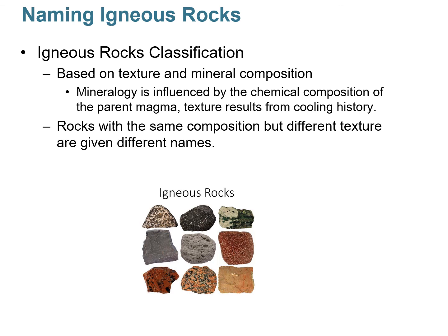So how are igneous rocks classified? Essentially it's based on their texture — all those different textures we talked about — and also the minerals present, which we call composition. Minerals have definite chemical composition, so based on whatever minerals are present in an igneous rock, that affects its overall composition. Mineralogy is influenced by the chemical composition of the parent magma, and texture results from the cooling history. Some igneous rocks will have the same composition but look very different due to different textures, and therefore they're given different names.